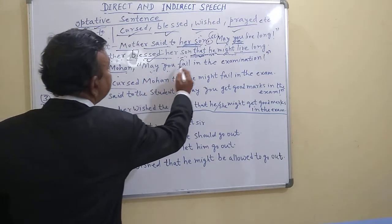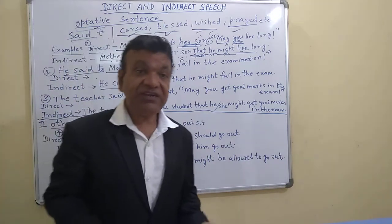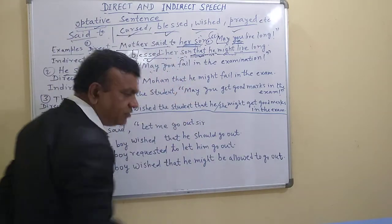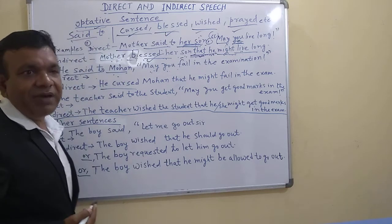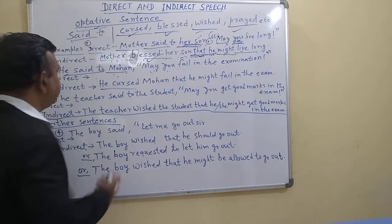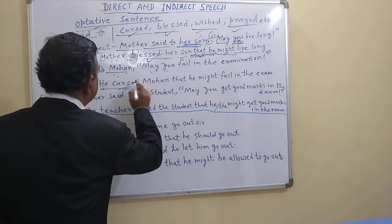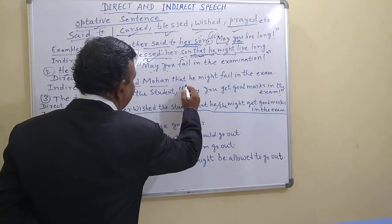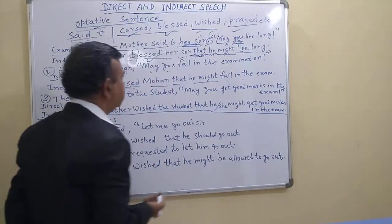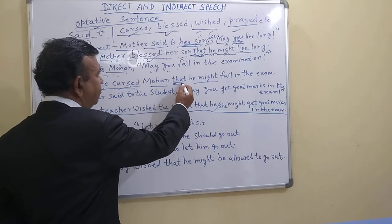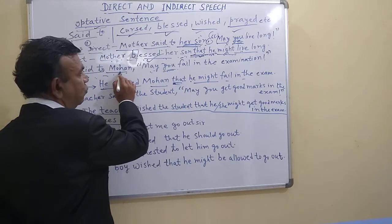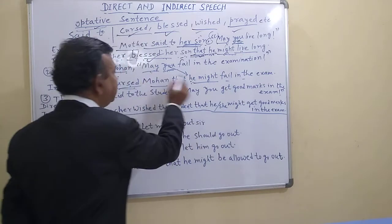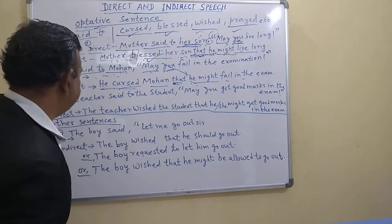Now the second sentence: 'He said to Mohan, may you fail in the examination.' This is a curse — he is not happy and is expressing anger. So 'said to' changes to 'cursed.' The inverted commas are removed and 'that' is added. 'You' changes to 'he' as it follows the object 'Mohan,' and 'may' changes to 'might.' The indirect form is: 'He cursed Mohan that he might fail in the examination.'